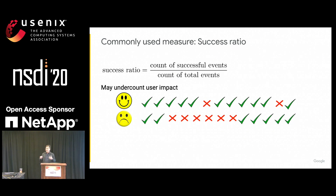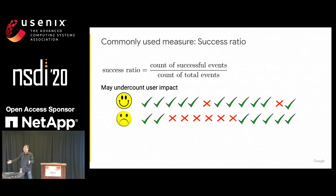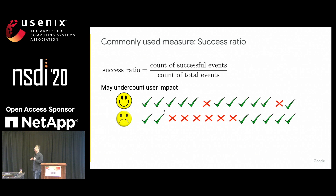In contrast, imagine we take all the unsuccessful operations and collapse them into a contiguous time interval. Now the user is unhappy because when things don't work, the system may be down for many minutes or hours, preventing them from getting any work done. Both users have the same success ratio, but the impact on them is significantly different — it's not meaningful to them.